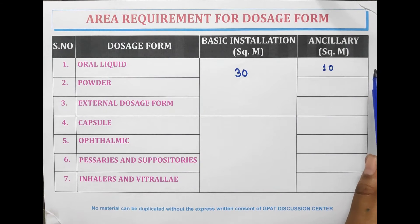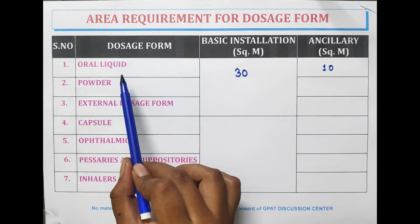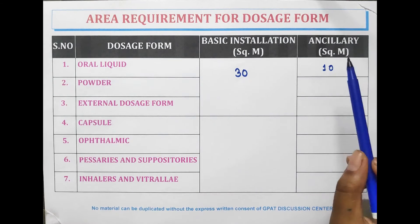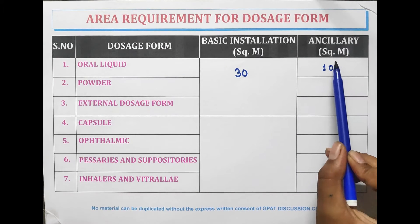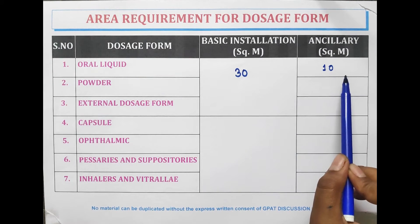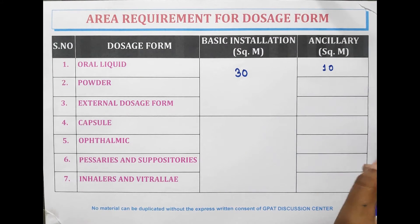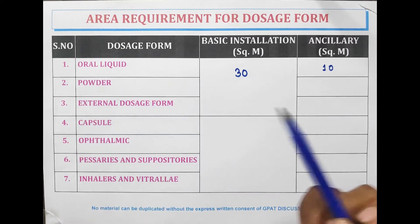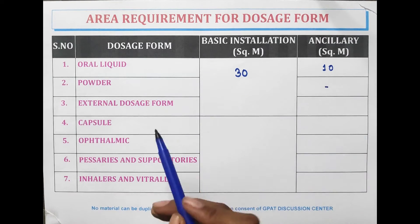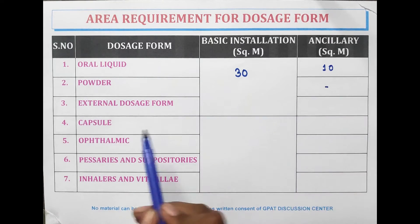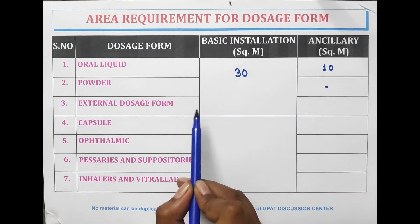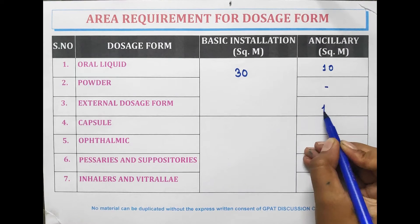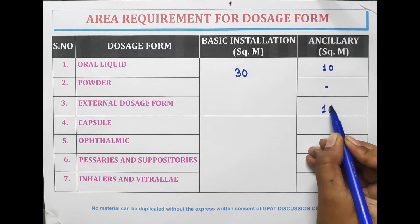For ancillary area: oral liquids require approximately 10 meter square. For powders, ancillary area is not mandatory. For external dosage forms, the minimum ancillary area requirement is 10 meter square.